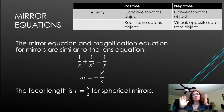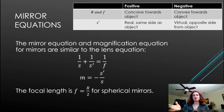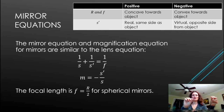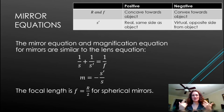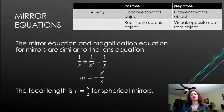This is the opposite sign convention from lenses, where s′ is positive on the opposite side. The key is to remember that a real image is formed from actual light rays — not the back-tracing of rays. For mirrors, light is reflected, so a real image must be on the same side as the object. s′ is negative if it's on the opposite side, making it a virtual image formed from back-traced rays.